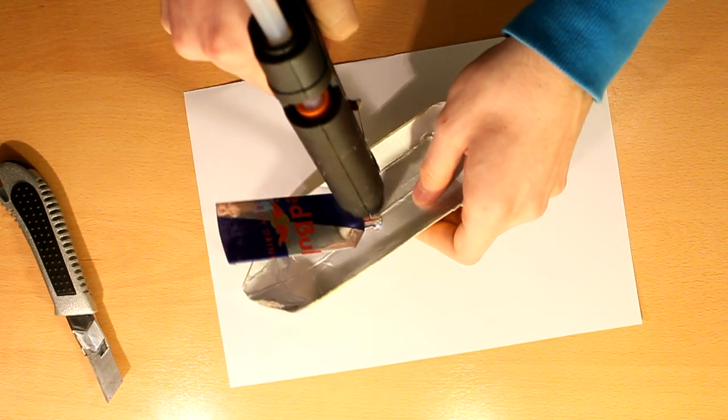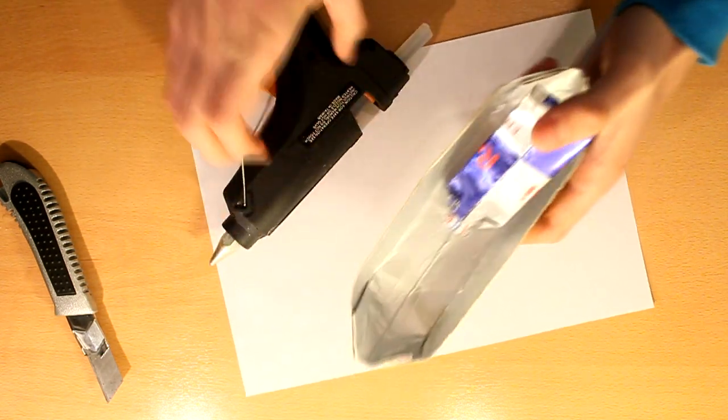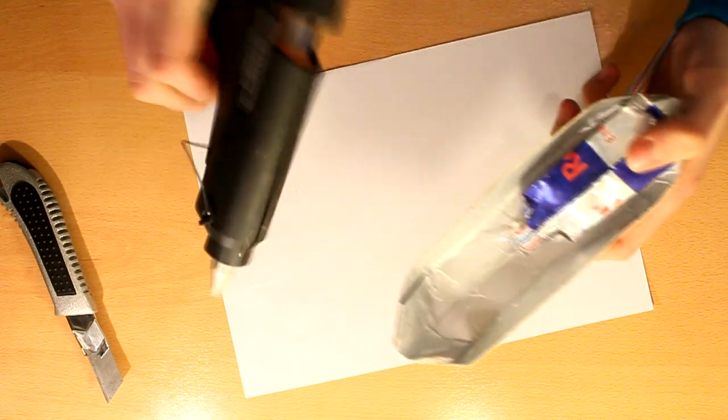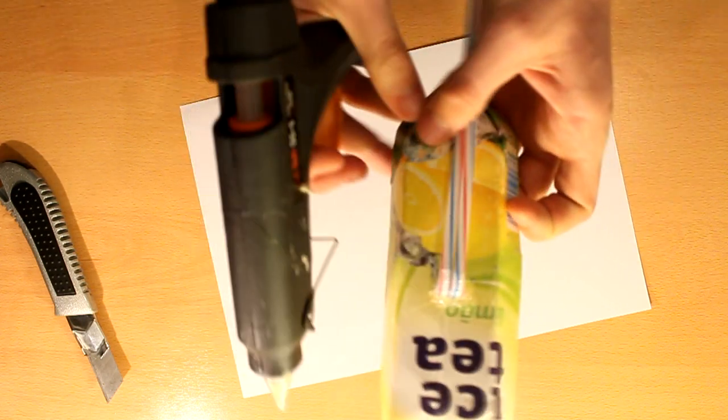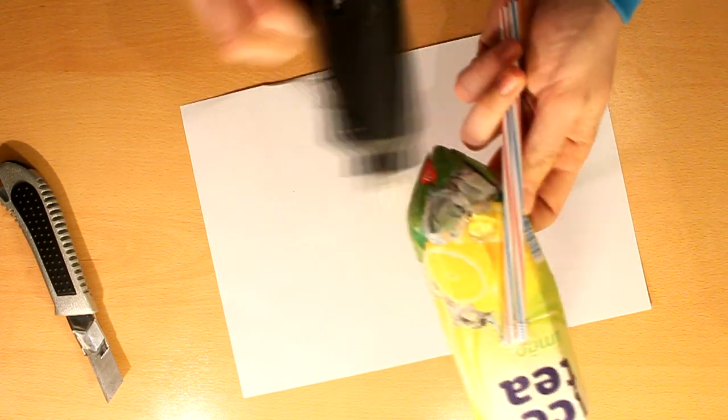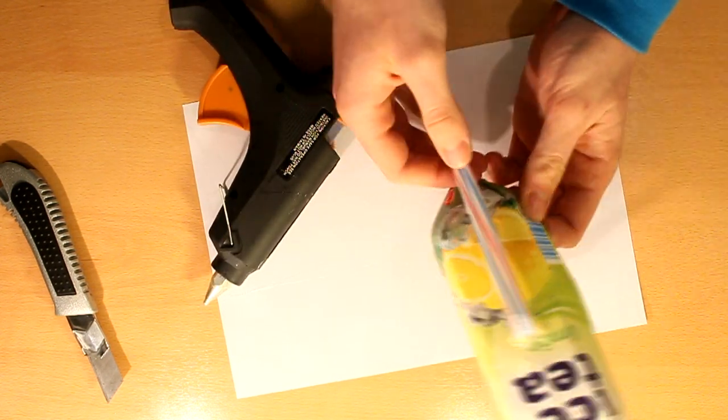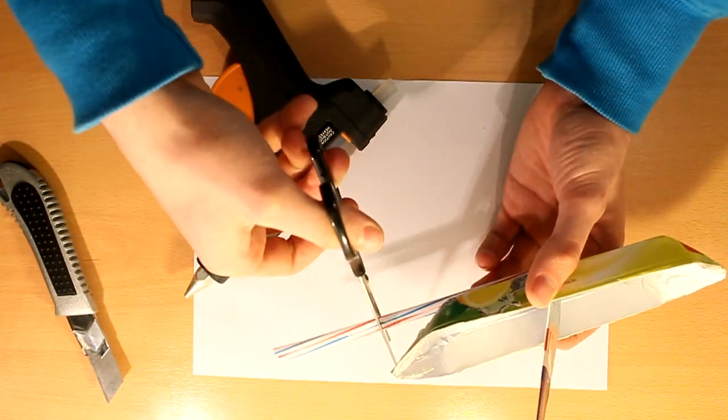Using a silicone gun or more glue, seal the passage so that the water won't come in. Do this on the other side. Cut the excess straw.